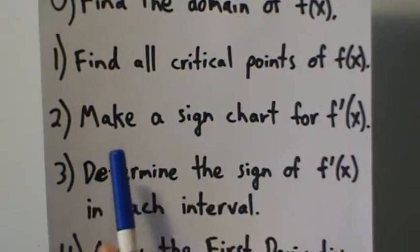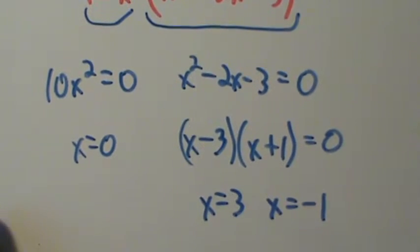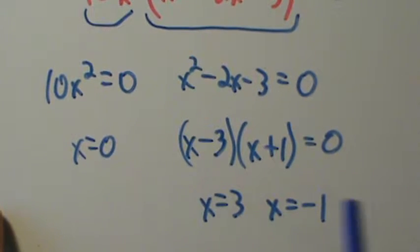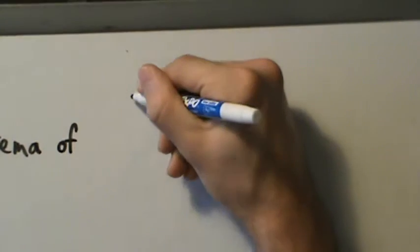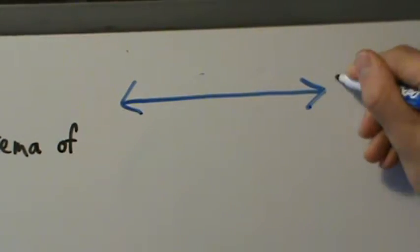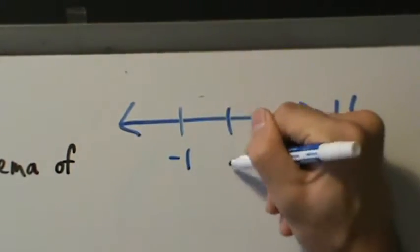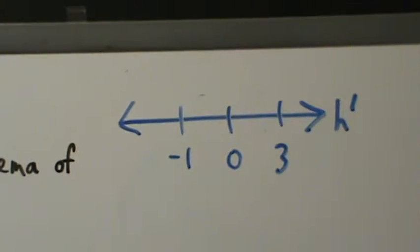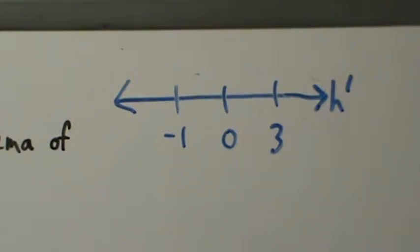That was step 1. Now step 2: make a sign chart for h prime. The domain is all real numbers, so we put negative 1, 0, and 3 on the chart. So here's negative 1, here's 0, here's 3 — this is not to scale, but that's fine. We have four intervals to check.